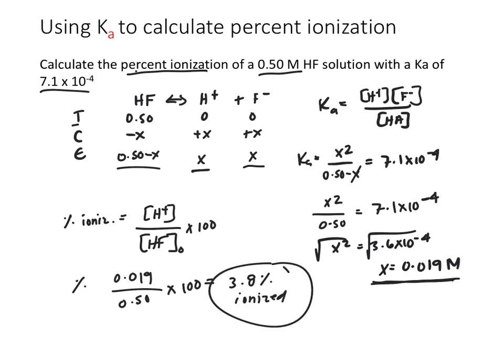What I want you to notice is that the check we do here is basically the same math as calculating our percent ionization — we get a two-for-one deal. Checking whether dropping X was acceptable is essentially the same as calculating percent ionization. This works because we're talking about monoprotic acids, where the difference ends up being equal to X.